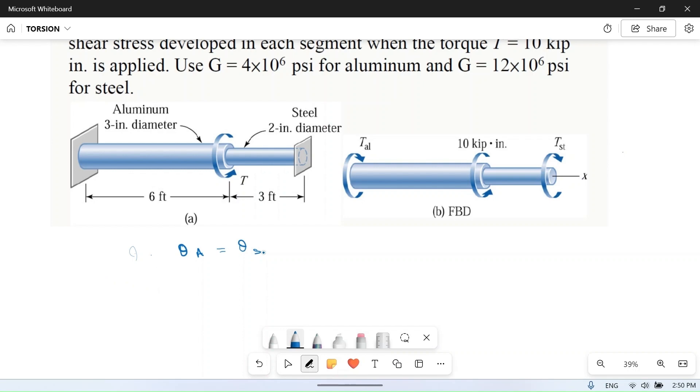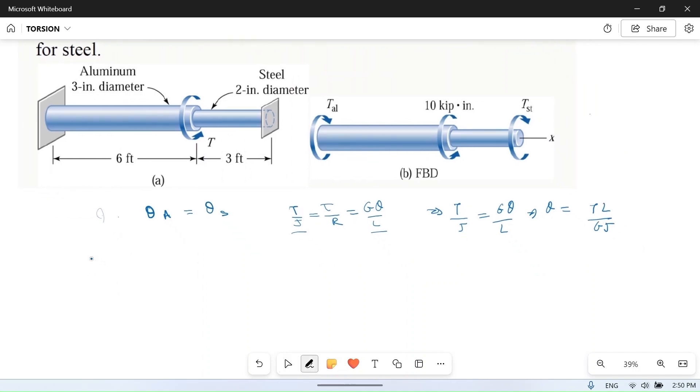Using T/J = Gθ/L, we get θ = TL/(GJ). Since θ_A = θ_S, we have T_A·L_A/(G_A·J_A) = T_S·L_S/(G_S·J_S). We will put the values. The torque for each segment we don't know, but the sum of